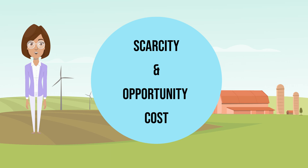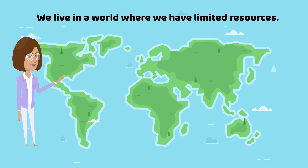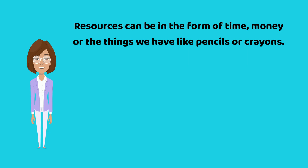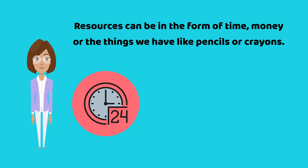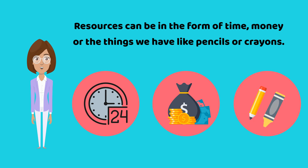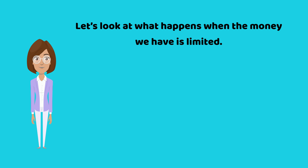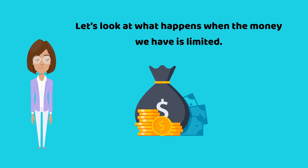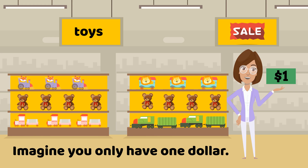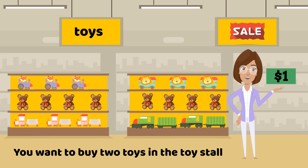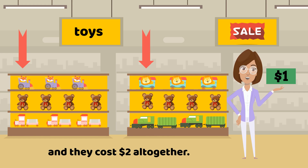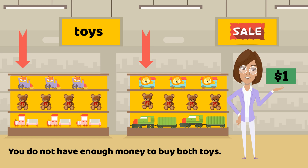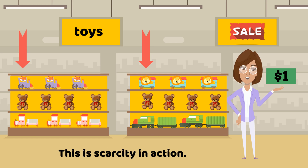Scarcity and opportunity cost. We live in a world where we have limited resources. Resources can be in the form of time, money, or the things we have like pencils or crayons. Let's look at what happens when the money we have is limited. Imagine you only have one dollar. You want to buy two toys in the toy stall, and they cost two dollars altogether. Over here, money is scarce — you do not have enough money to buy both toys. This is scarcity in action.